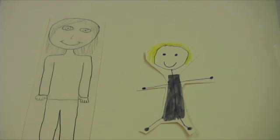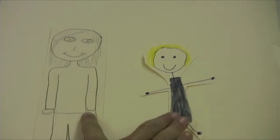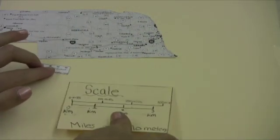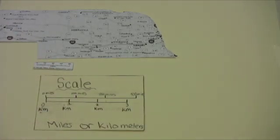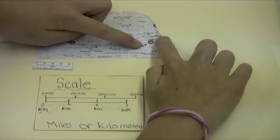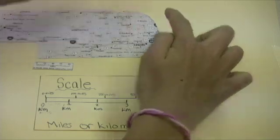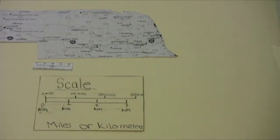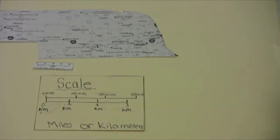Carrie replies, Scales are used for measuring distances from one point to another. For example, Omaha to Lincoln, it's about 50 to 60 miles. Scales give distance in miles and kilometers.